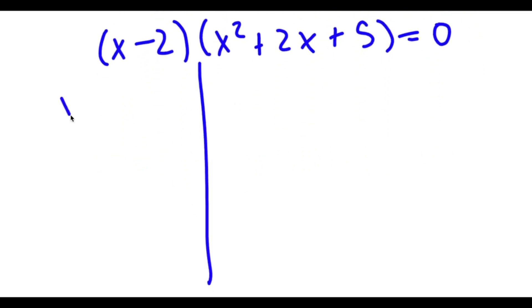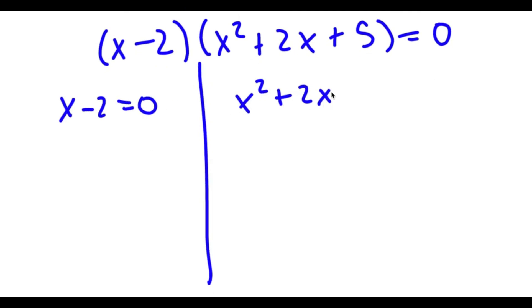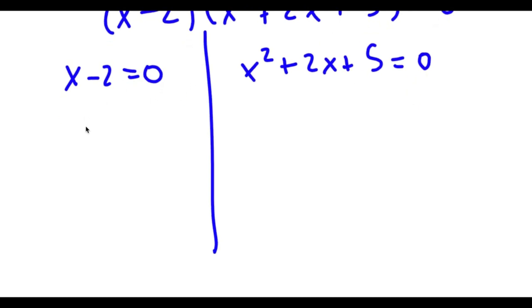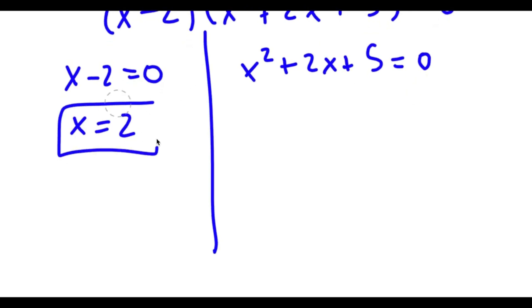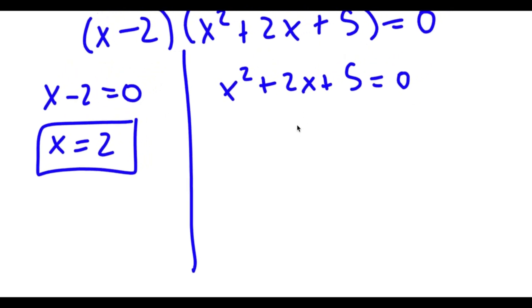Now to solve this, I have two equations: x minus 2 is equal to 0, and x squared plus 2x plus 5 is equal to 0. For x minus 2 equals 0, x is obviously equal to 2, so this is one solution.